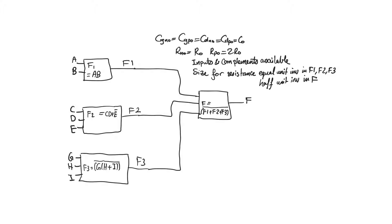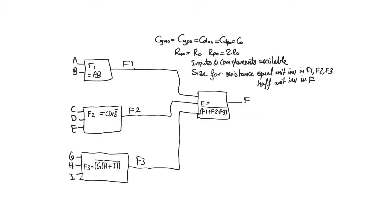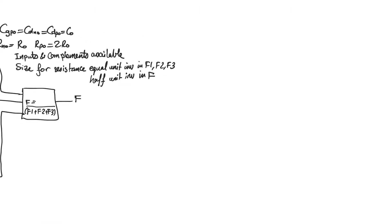We are required to find the delay from inputs a to output f. We start by implementing the four gates f1, f2, f3, and f. Gate f1 is an AND gate of a and b, so f1-bar is a-bar plus b-bar. When we look at the implementation it's a-bar plus b-bar.